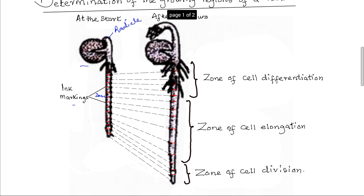After 24 hours, the observations made are that the intervals between the marks increased due to growth. At the start there were just two-millimeter intervals, but after 24 hours the lengths of all the intervals have increased. However, the marks become most widely separated a short distance behind the tip, where we have the greatest growth and therefore the greatest separation of the intervals.